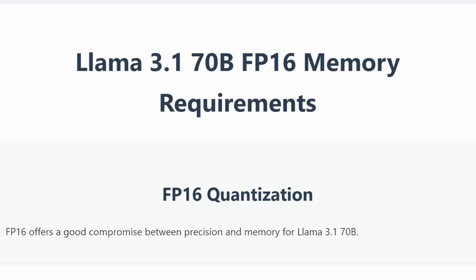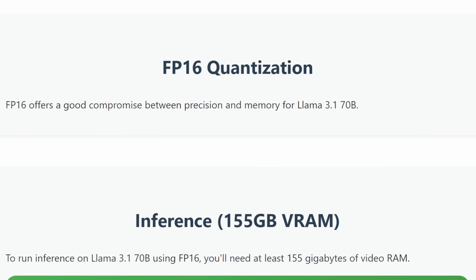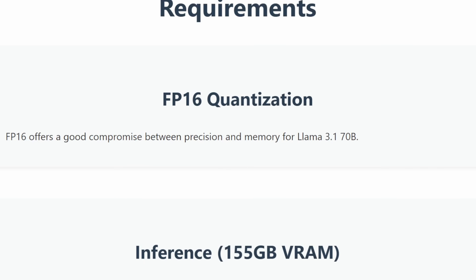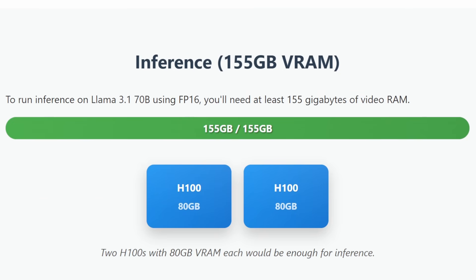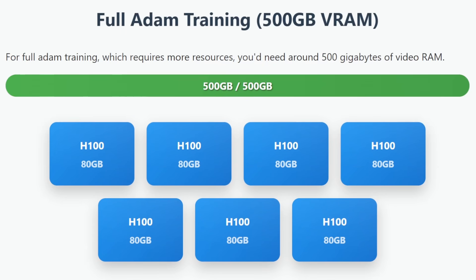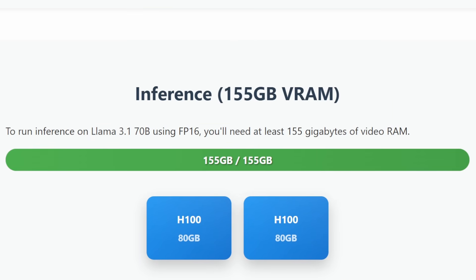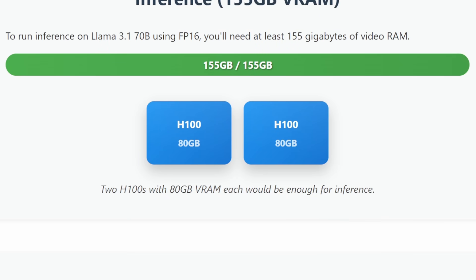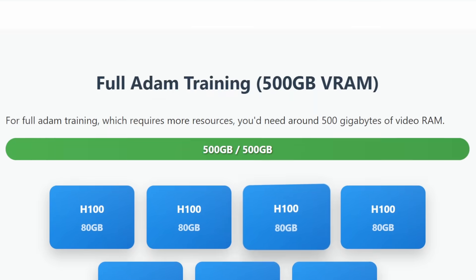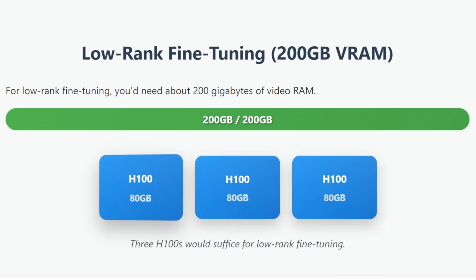Moving on to FP16, which offers a good compromise between precision and memory. For FP16 quantization, you'd need at least 155 gigabytes of VRAM for inference. Full training would require around 500 gigabytes, and for low-rank fine-tuning, around 200 gigabytes. In terms of GPUs, 2 H100s with 80 gigabytes each would be enough for inference, around 7 H100s for full training, and 3 H100s for low-rank fine-tuning.